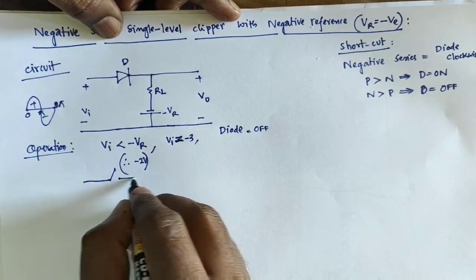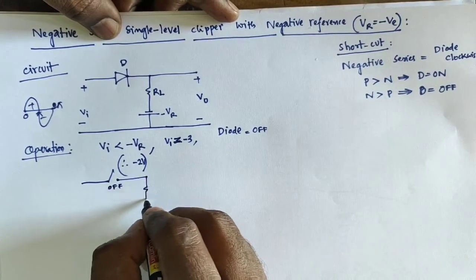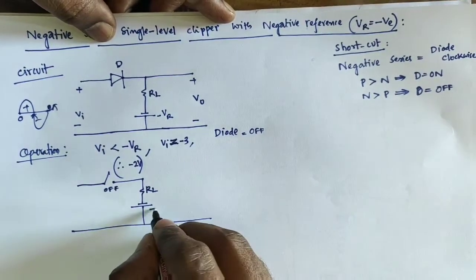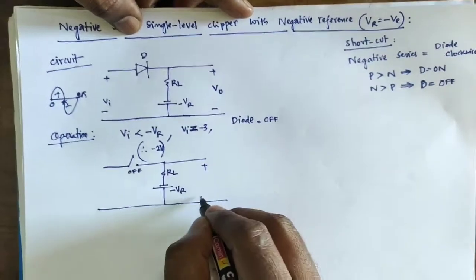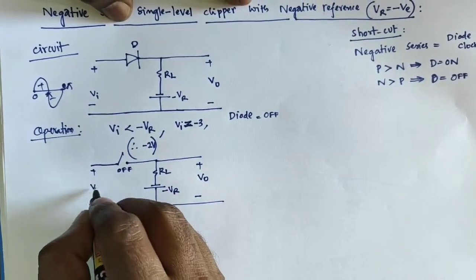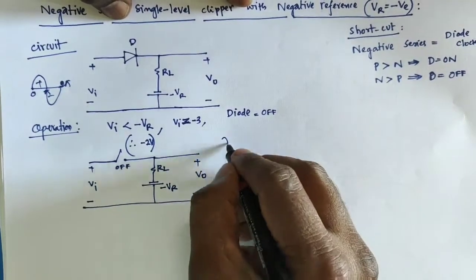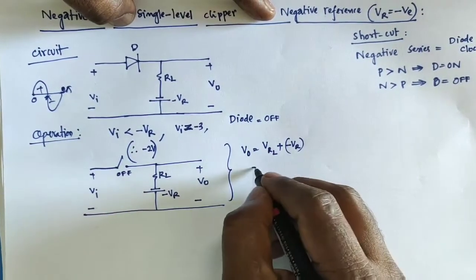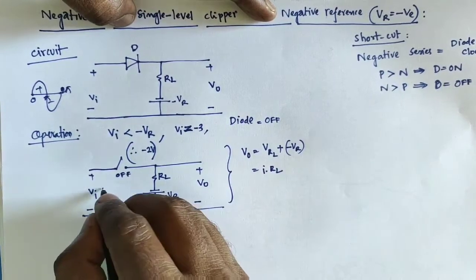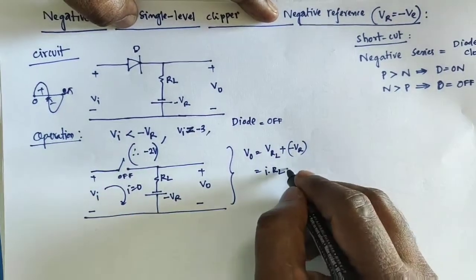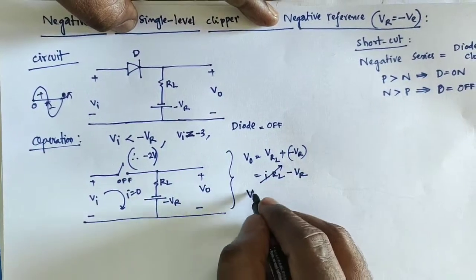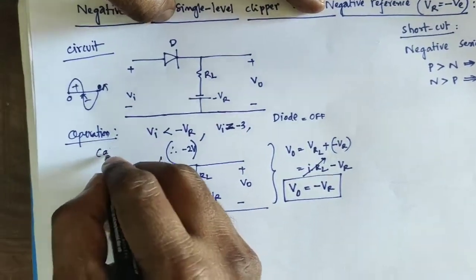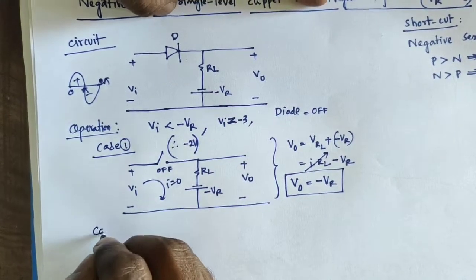With the diode in the off state (open circuit) and using load resistor RL, the reference is minus Vr. The output voltage V_naught equals VRL plus minus Vr. Since the diode is off, current i is equal to zero, so VRL equals zero. Therefore V_naught equals minus Vr. This is Case 1.